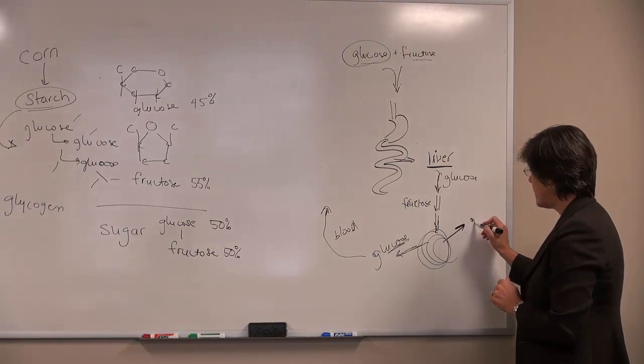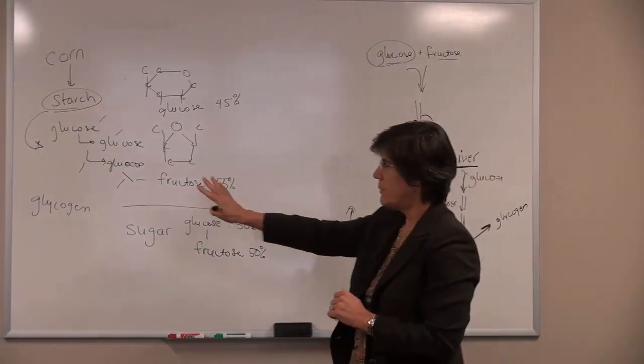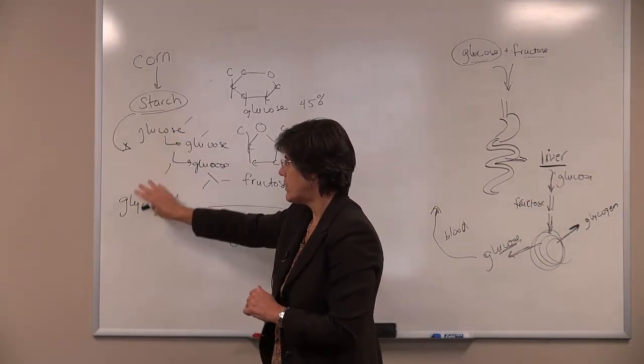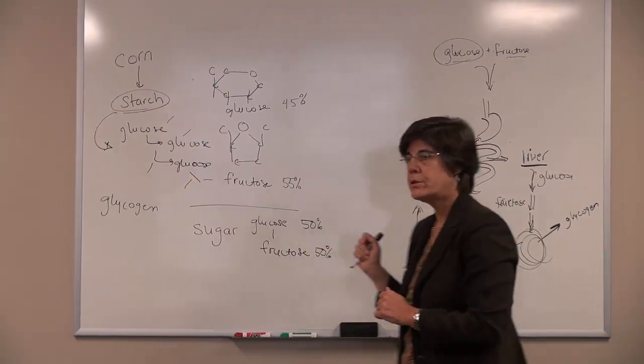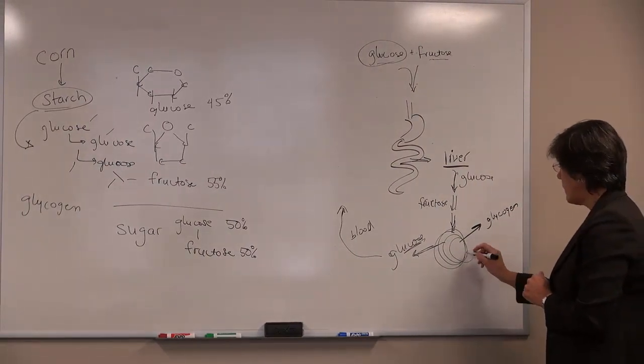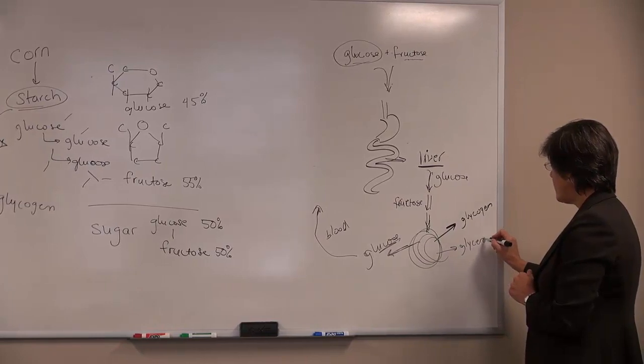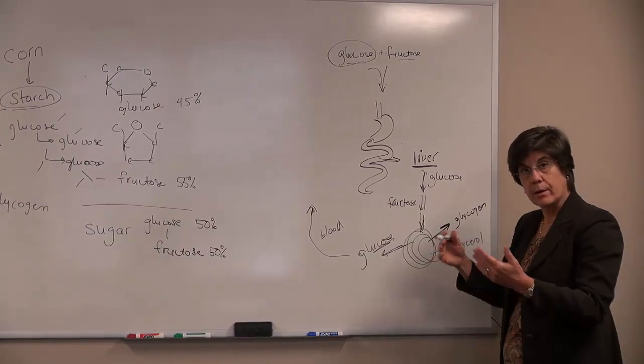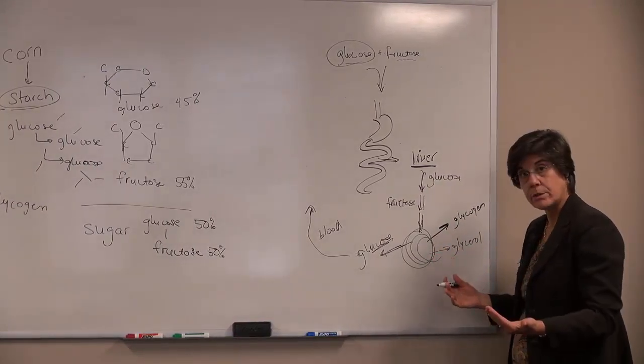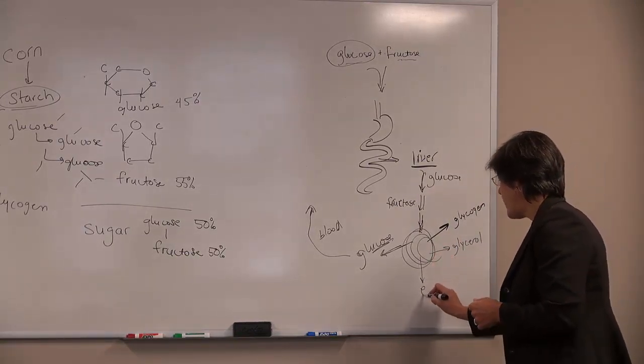Some of it will be stored as glycogen. Glycogen is that molecule that we talked about over here that looks like starch - it's the storage form of glucose in our body. A little bit will be converted into something called glycerol which is used in fat metabolism, things like triacylglycerols or triglycerides, and then some of it will be used to make energy.